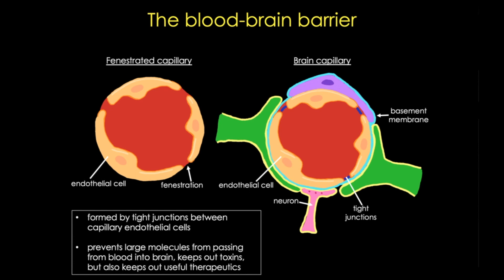Other important components of the blood-brain barrier are the end-feet of astrocytes and very specialized cells called pericytes. For more details on capillaries, the blood-brain barrier, and pericytes, watch my video on the vasculature of the cardiovascular system.